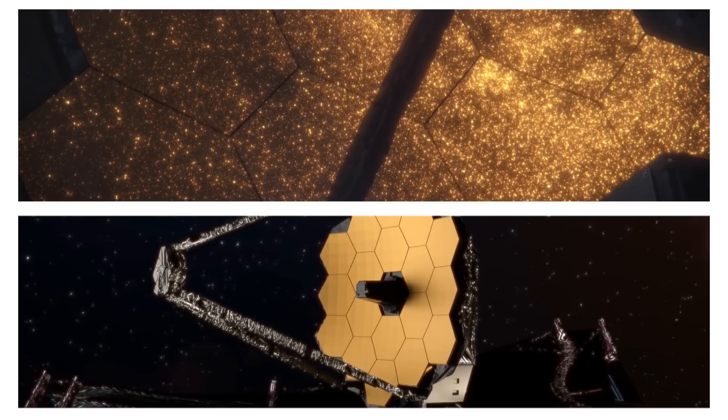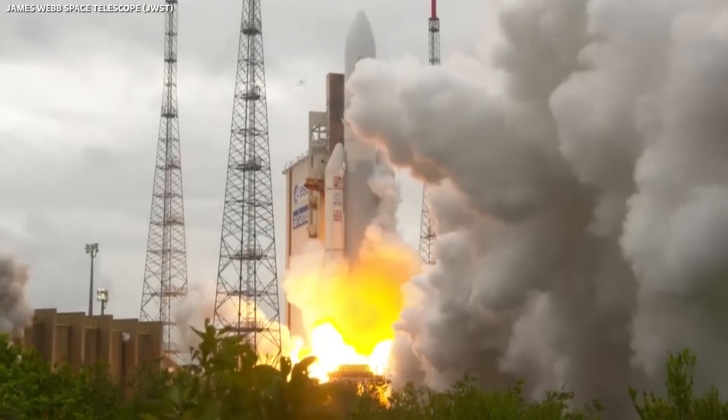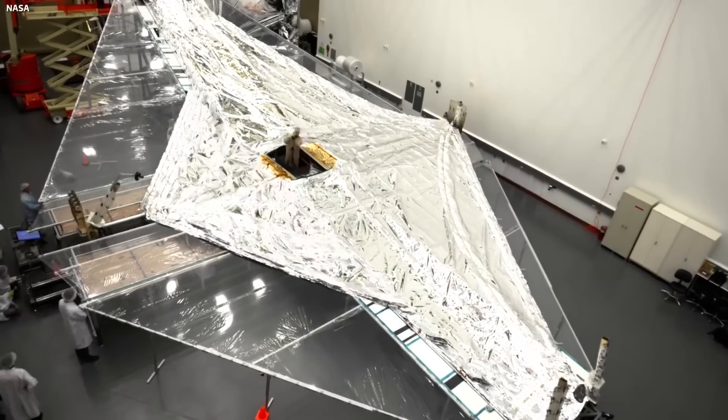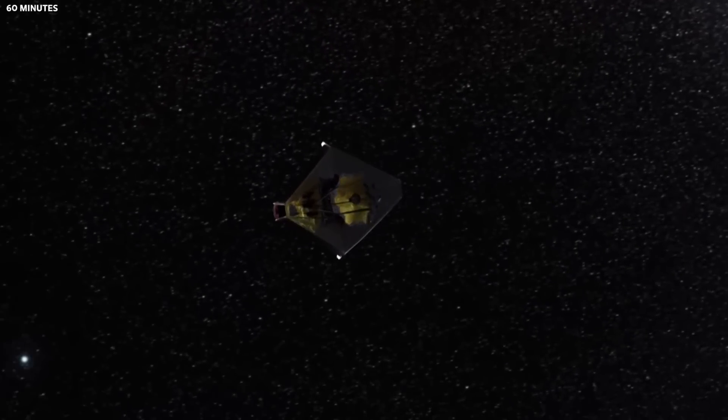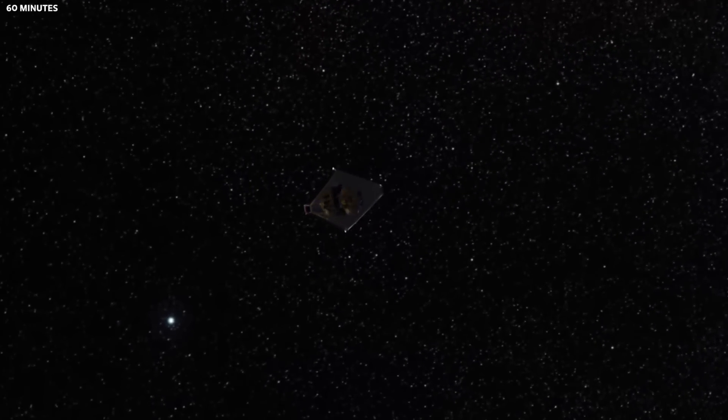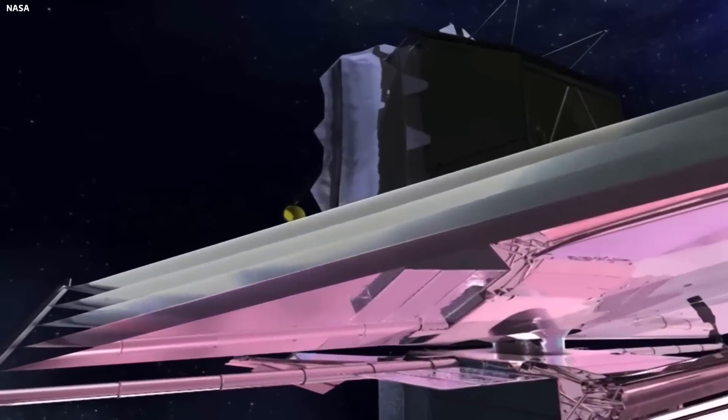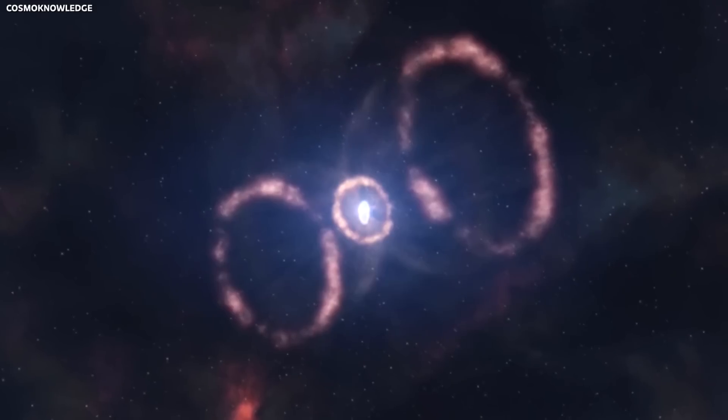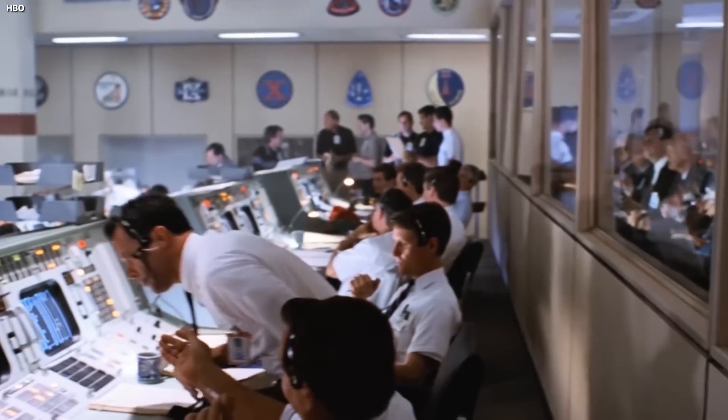The James Webb Space Telescope has been at the forefront of astronomical discoveries since its launch. Its advanced instruments and unparalleled infrared capabilities have allowed it to peer into the farthest reaches of the universe, revealing secrets that have long eluded us. One of its most recent and concerning discoveries revolves around the star Betelgeuse and its supernova event in 2023. What's this startling revelation that the JWST has just uncovered? Let's find out.